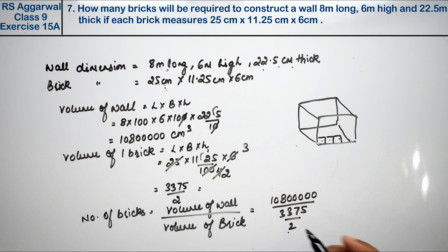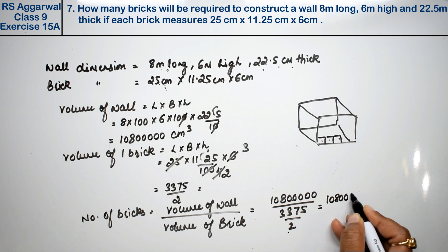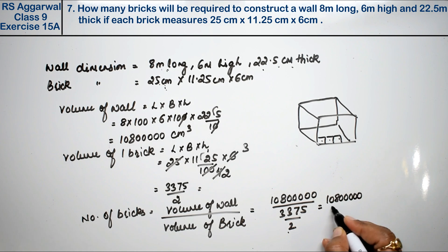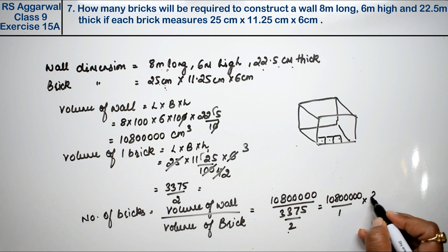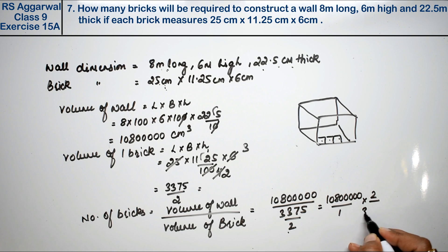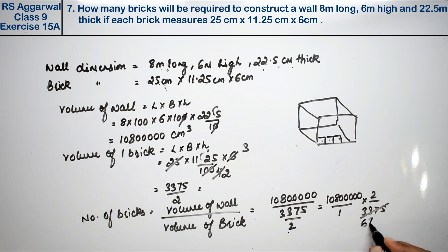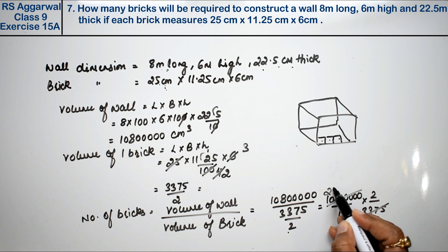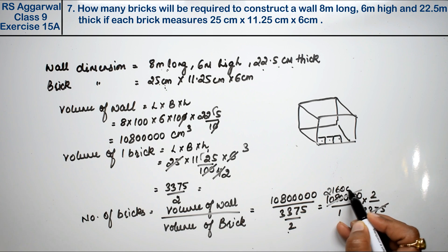We write 10,800,000 divided by 3375 divided by 2, which gives 10,800,000 into 2 over 3375. Now simplifying: 5 into 6 is 30; 5 into 7 is 35; 5 into 5 is 25; 5 into 2 is 10; 5 into 1 is 5; 5 into 6 is 30 and 4 is 0.